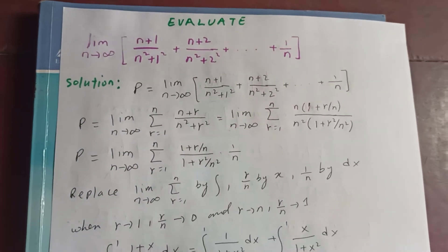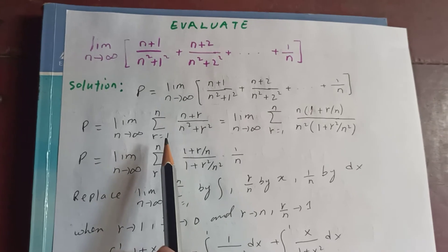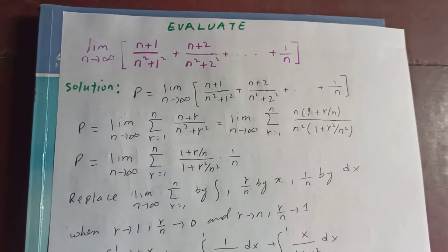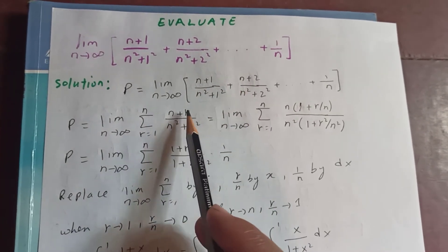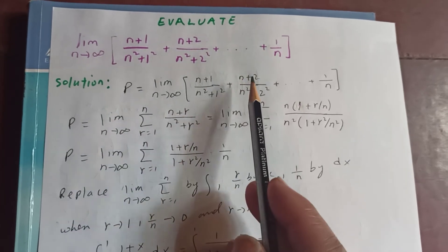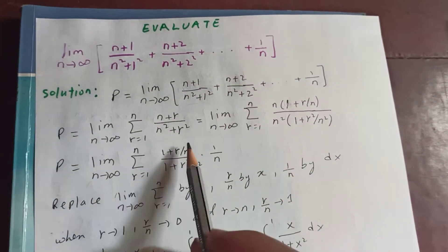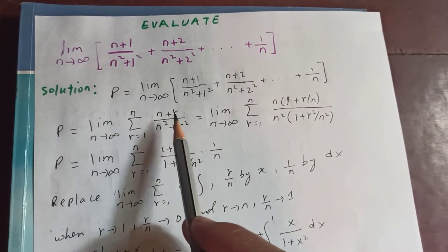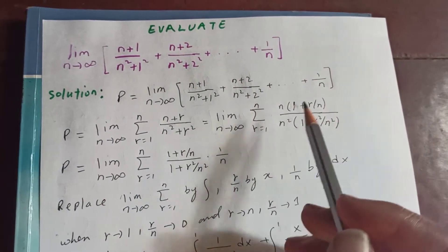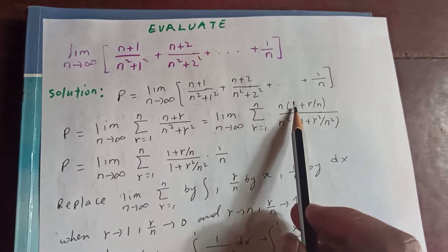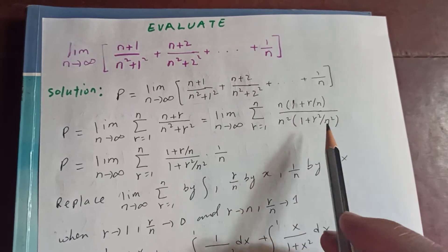We want to put this in terms of summation. So P equals limit as n tends to infinity, sum from r equal to 1 to n of n plus r upon n squared plus r squared. Now taking n common in the numerator gives 1 plus r by n, and taking n squared common in the denominator gives 1 plus r squared by n squared.